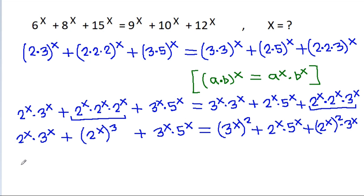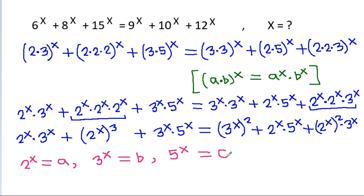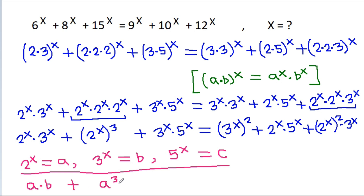Now we substitute: let 2^x equal a, 3^x equal b, and 5^x equal c. Then the equation becomes: ab plus a^3 plus bc is equal to b^2 plus ac plus a^2 b.